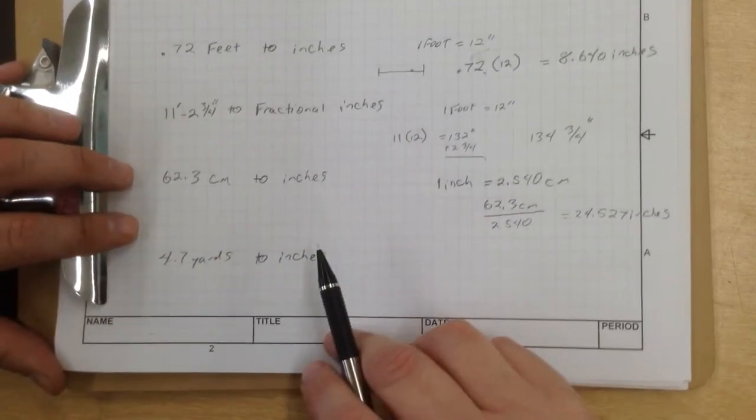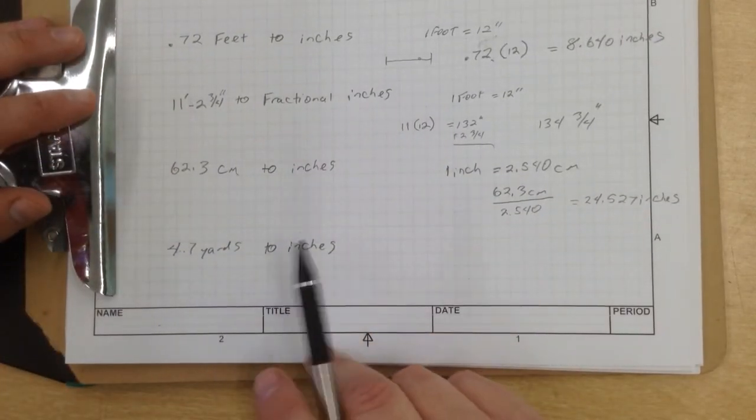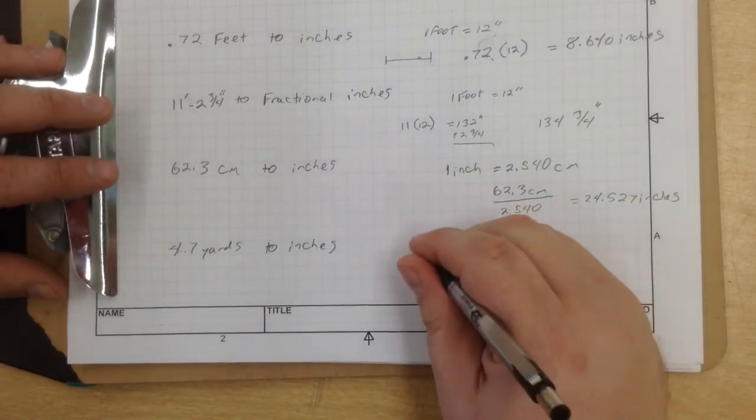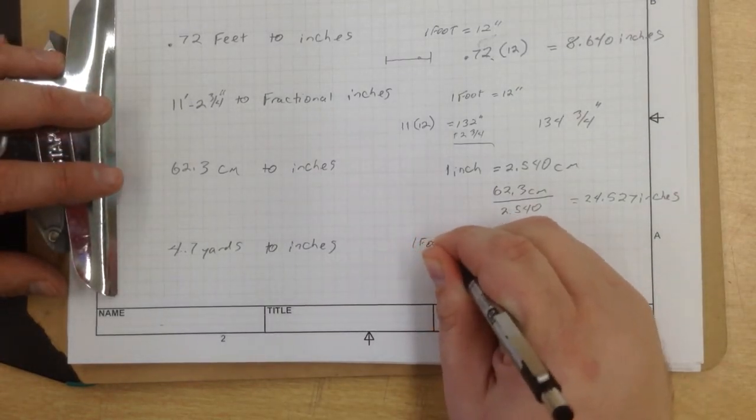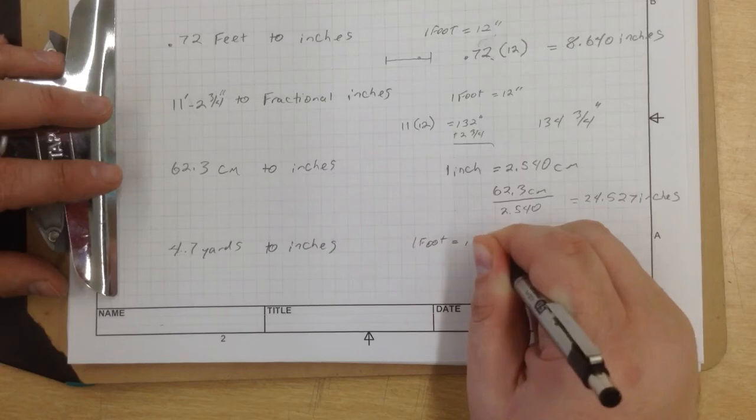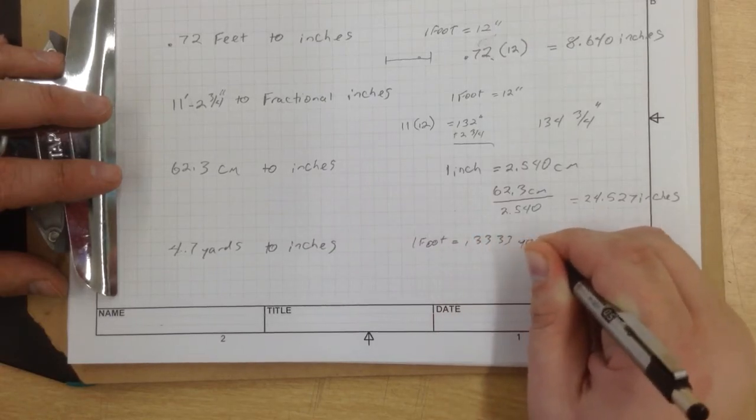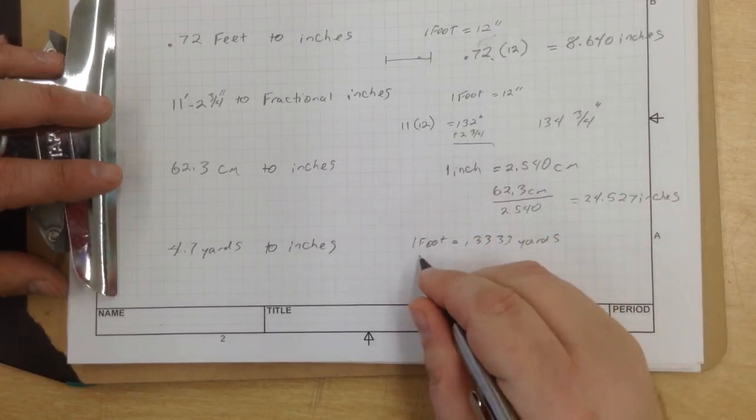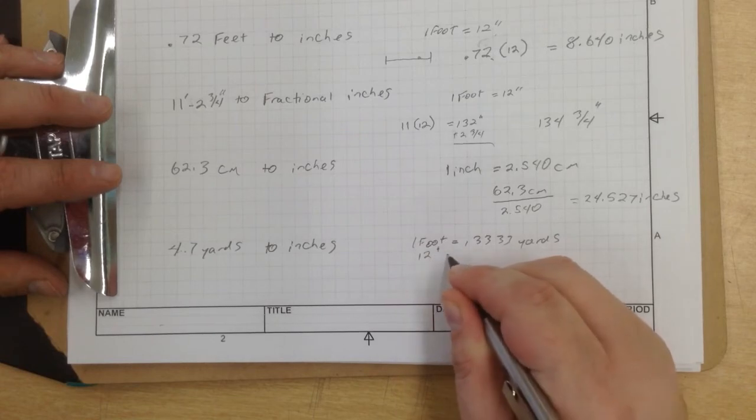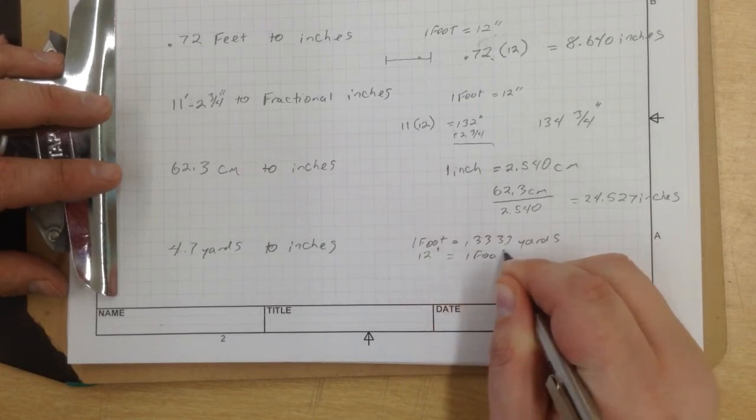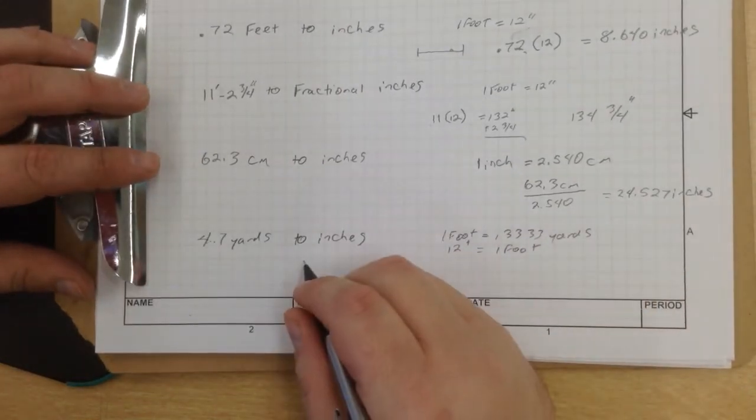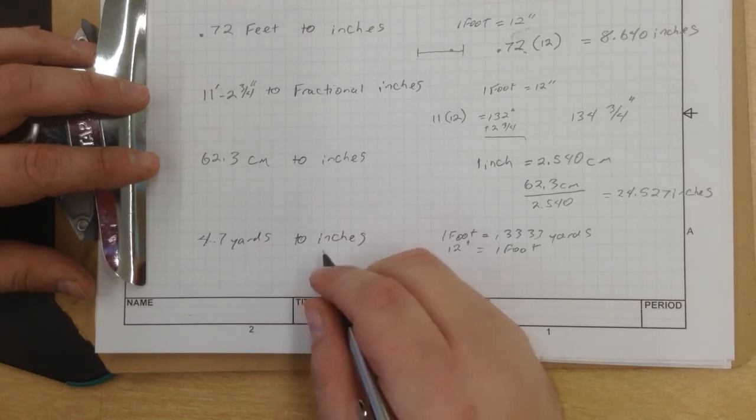Now next, this one gets a little bit sticky, yards to inches. You need to remember that one foot equals 0.3333 yards. And remember, there is 12 inches in one foot. So first thing we're going to do is convert yards to feet.